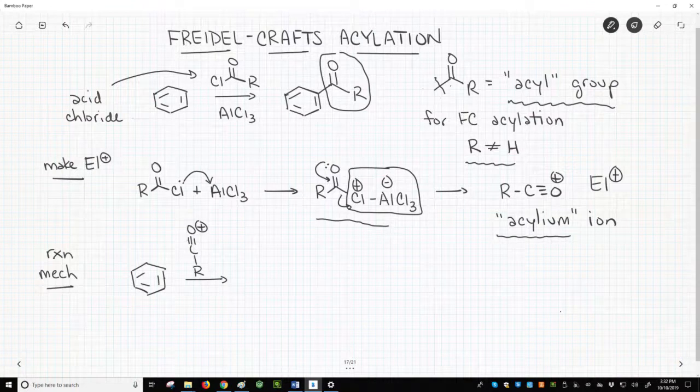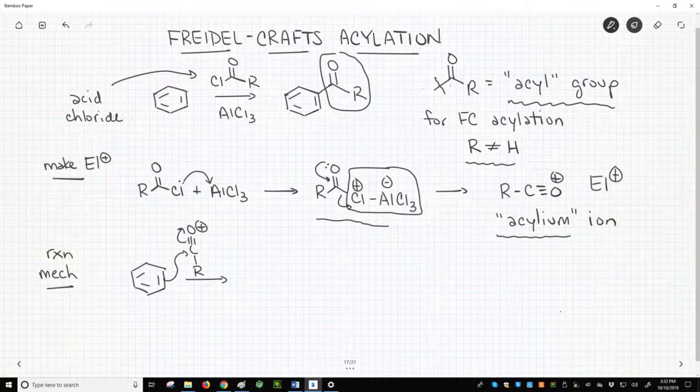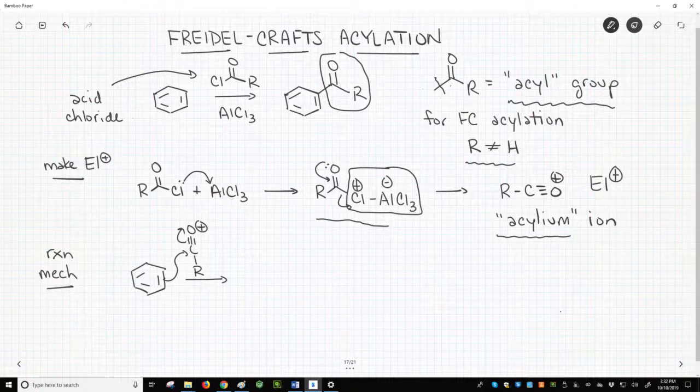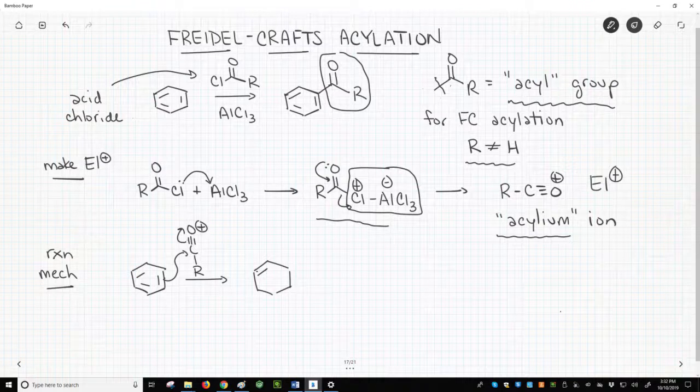For the reaction, the aromatic ring attacks the acylium ion carbon and pushes a bonding pair of electrons up on the positive oxygen. That gets us to our carbocation intermediate bearing our acyl group.